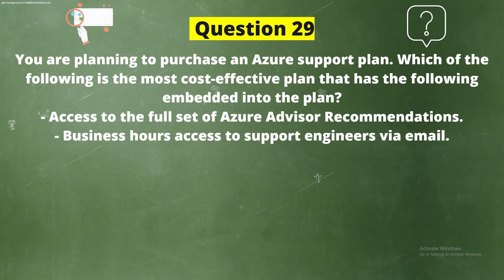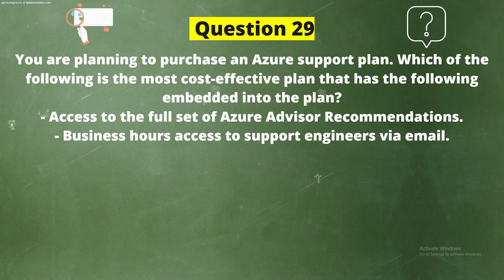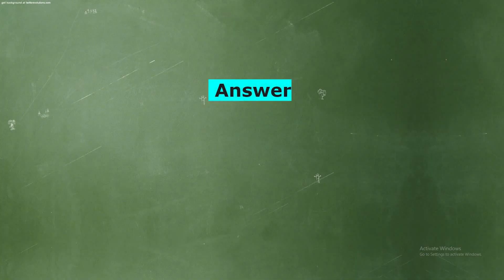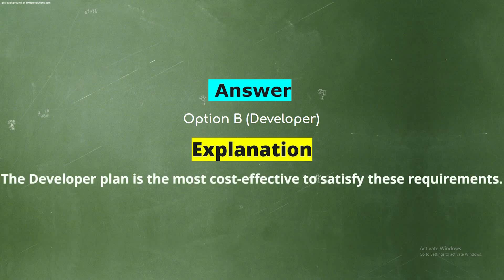Question 29. You are planning to purchase an Azure support plan. Which of the following is the most cost-effective plan that includes access to the full set of Azure Advisor recommendations and business hours access to support engineers via email? Option A: Basic. Option B: Developer. Option C: Standard. Option D: Professional Direct. The correct answer is Option B, Developer. Explanation: The Developer plan is the most cost-effective to satisfy these requirements.